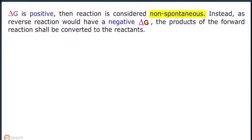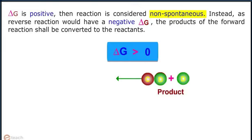If delta G is positive then the reaction is considered non-spontaneous. Instead, as the reverse reaction would have a negative delta G, the products of the forward reaction shall be converted to the reactants.